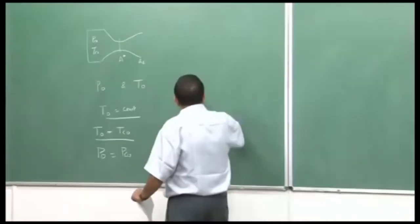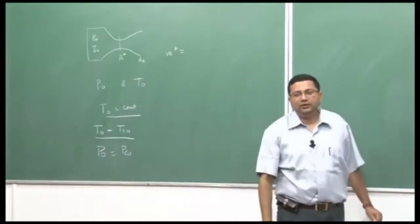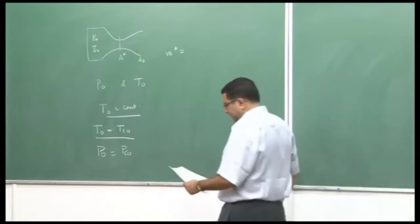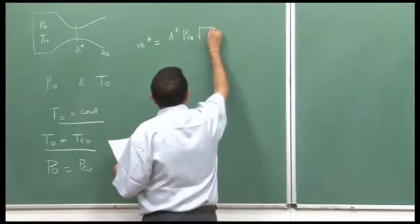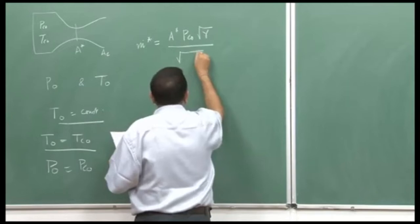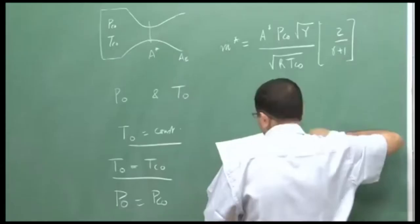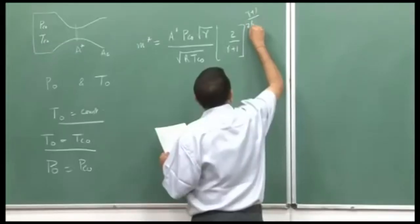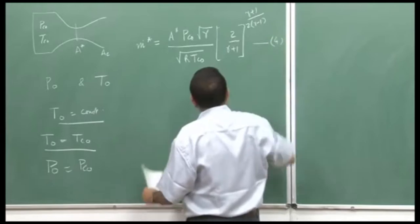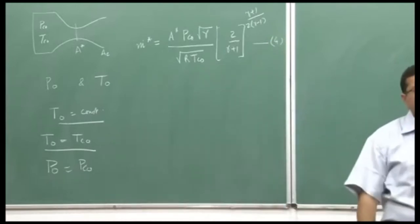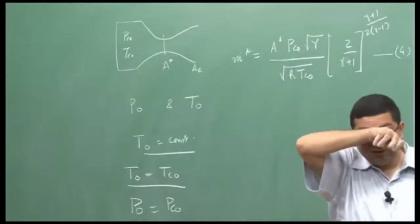Based on this, we derived the critical mass flow rate — the throat mass flow rate — which is equal to A* P_c0 divided by the square root of (γ / R T_c0) times (2/(γ+1))^((γ+1)/(2(γ−1))). We call this Equation 4. The only difference from the general expression is replacing stagnation quantities with combustion chamber values at the throat.